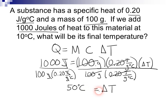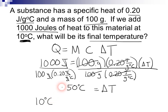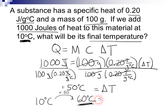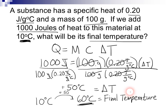Now that's not the answer — this is the change in temperature. So we have to find what is the final temperature of this material. It says we started at 10 degrees Celsius. If we start the temperature at 10 degrees Celsius and then it has a change of positive 50 degrees Celsius, what is its final temperature? What's 10 plus 50? That would be 60 degrees Celsius. And so that is our final temperature. This is the way to solve for these values in the equation Q equals MC delta T.